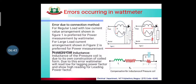Now let's look at errors in the watt meter. The first error is due to the connection method — depending on whether the load current is small or large, you choose the appropriate connection figure. The second error is pressure coil inductance, which arises due to the coil's own construction. Because of this error, the watt meter will read low for lagging power factor and show a high reading for leading power factor.